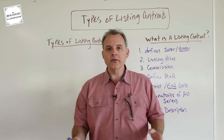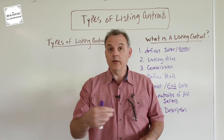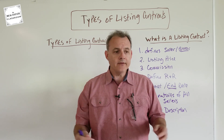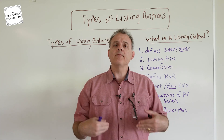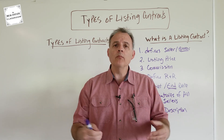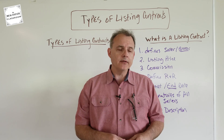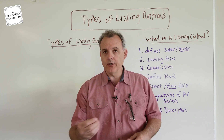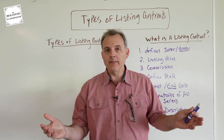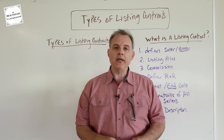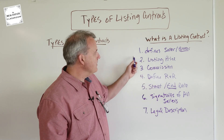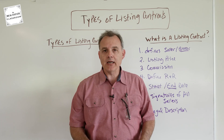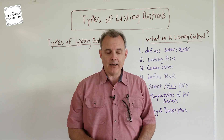Listing contracts can have a bunch of other things, such as the postal address. If it's not raw land, it can include what personal property will and won't be included in the sale, or what fixtures are going to be included or not included, such as family heirlooms or a chandelier. But this is basically the minimum of what has to be in a listing contract for it to be legally binding and enforceable.